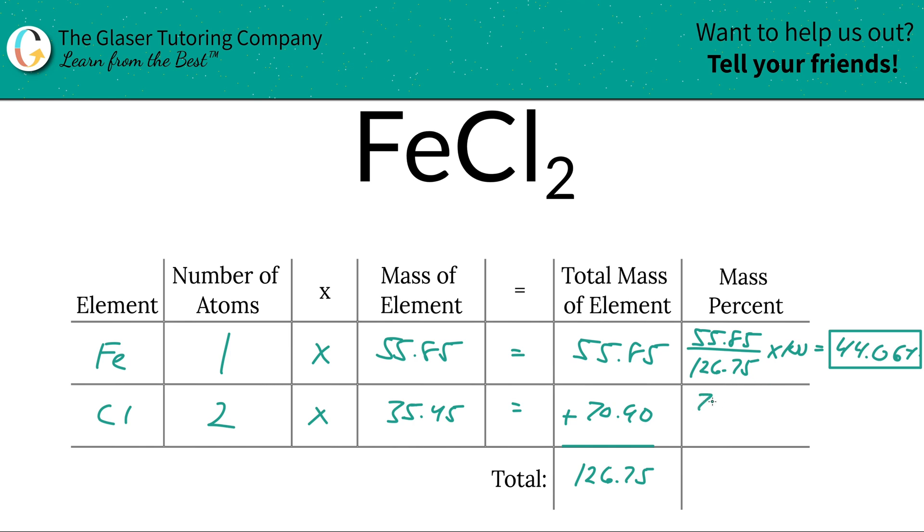Then chlorine is going to be 70.90, take that total, and divide it by the total mass of the entire compound, 126.75, multiply it by 100. This is a simple percent calculation, part over whole times 100. When we calculate that, that should work out to be roughly 55.94 percent.